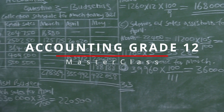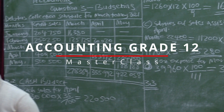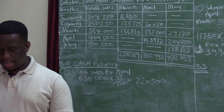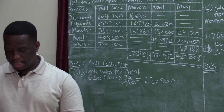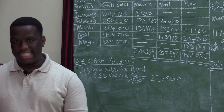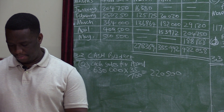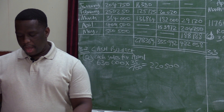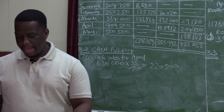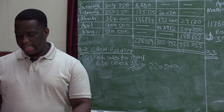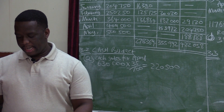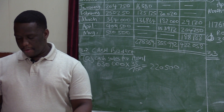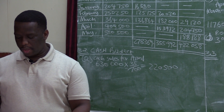Proceeding to question 3.3. It says refer to information G and H. Explain the decisions that the directors took regarding the budgeted and actual expenditure for advertising in May 2021.